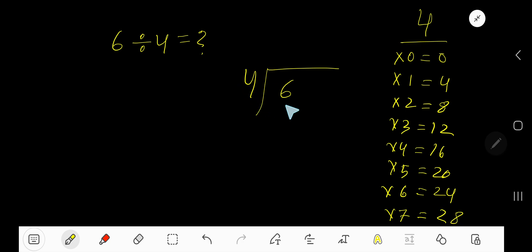4 goes into 6 how many times? Look: 1 times 4 is 4, 2 times 8 which is greater, so one time. Write 1. 1 times 4 is 4. Subtract and you are getting 2. So our answer is 1 remainder 2.